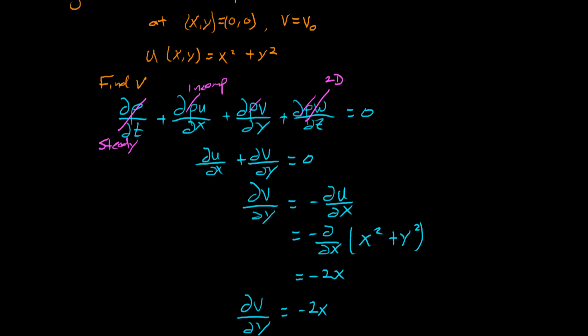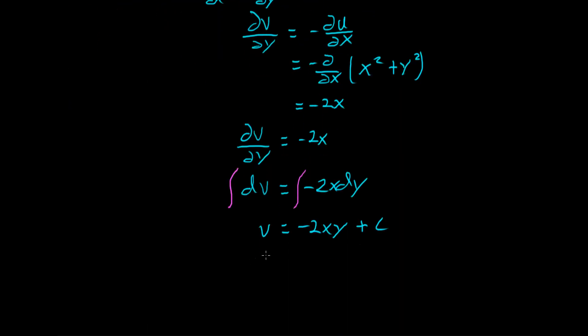So using the given condition, we can write that v of zero, zero is equal to minus 2 times zero times zero plus c, and we were told that that has to be equal to v zero. Which just tells us that c is equal to v zero.